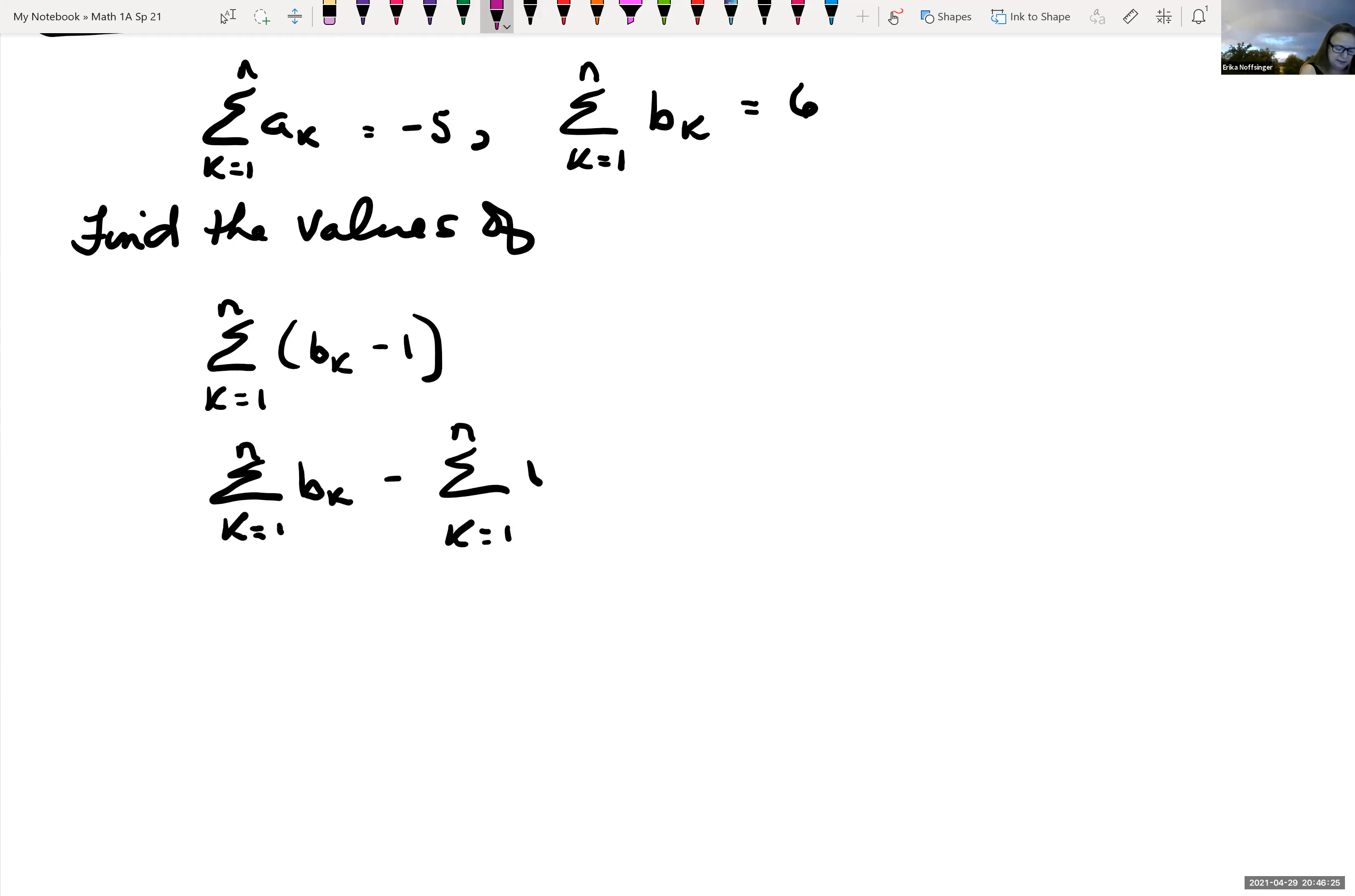Well, we're giving up here what B sub K is. Summation of B sub K from one to N is six. So this is six minus, well, this is telling me I'm summing one by itself, one N times, which is one times N, which is N.